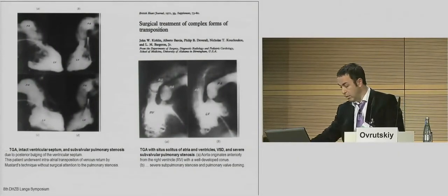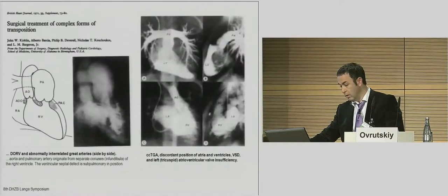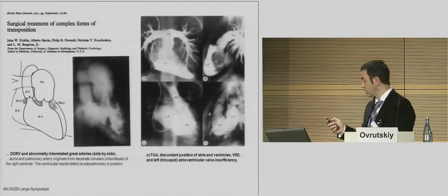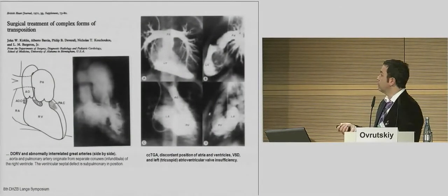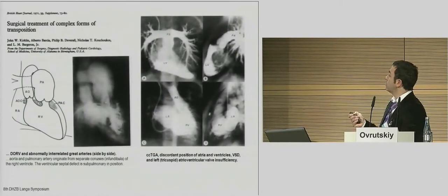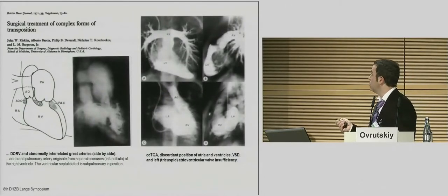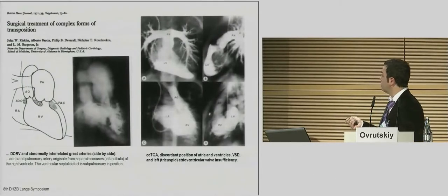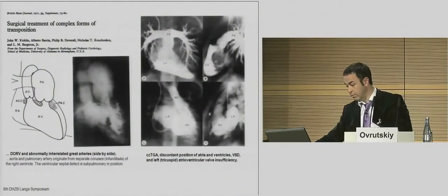Angiography was the main diagnostic tool at that time. These are printouts from the original paper 35 years ago: a double outlet with conus anatomy, and here is the congenitally corrected transposition with malposition and regurgitation of the arterioventricular valve.